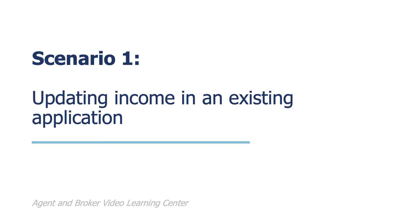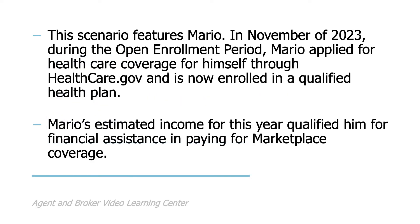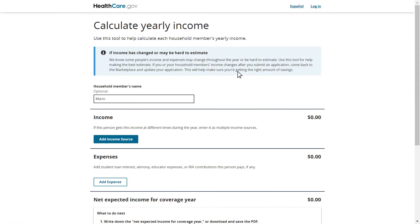The first scenario we will review is how to update income in an existing application using the Income Calculation Tool. This scenario features Mario. In November of 2023, during the open enrollment period, Mario applied for healthcare coverage for himself through healthcare.gov and is now enrolled in a qualified health plan. Mario's estimated income for the upcoming year qualified him for financial assistance in paying for marketplace coverage. However, a few months later, Mario temporarily lost his job and therefore his income changed from the previous estimate on his application. Mario will update his marketplace application to ensure he is getting the right amount of financial assistance.